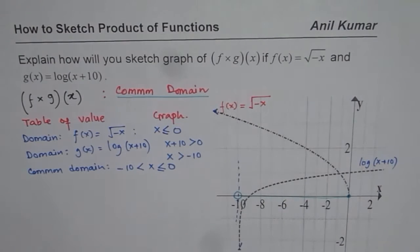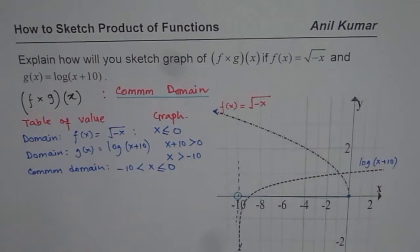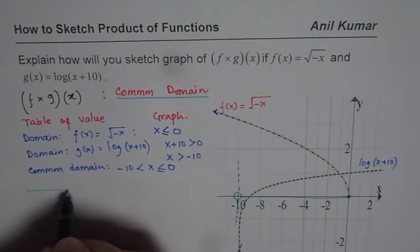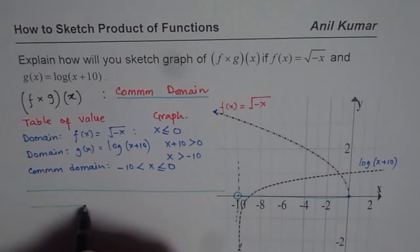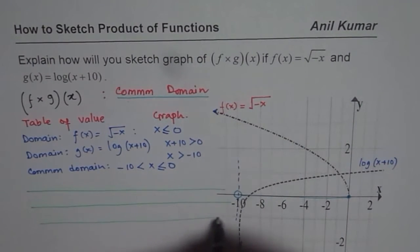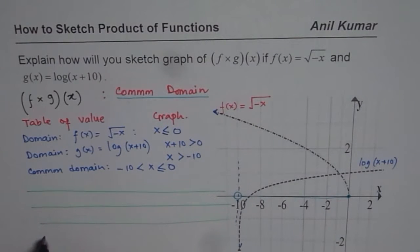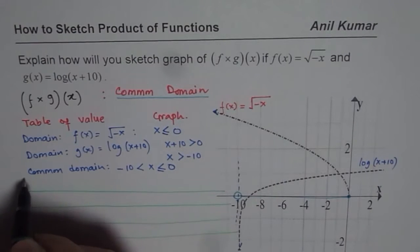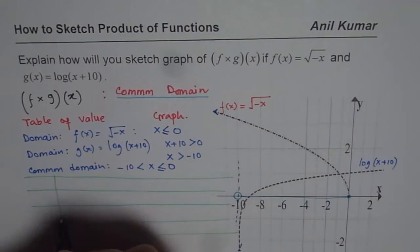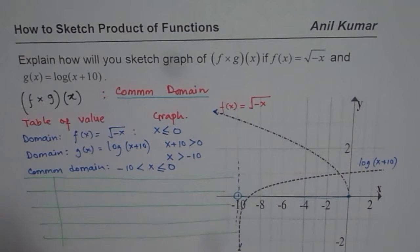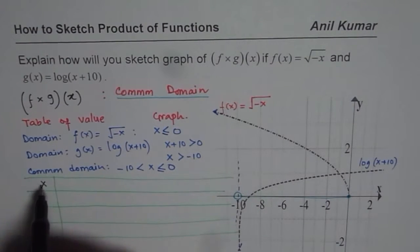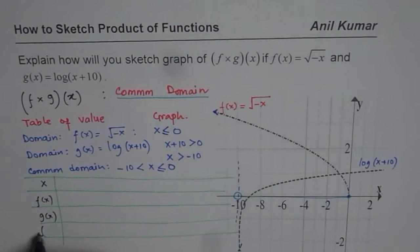Now what we can do is calculate some values and then plot the graph of their product. We will take some values of x, calculate f of x and g of x for those values, and then multiply them to get the product. That is the strategy we are going to adopt.